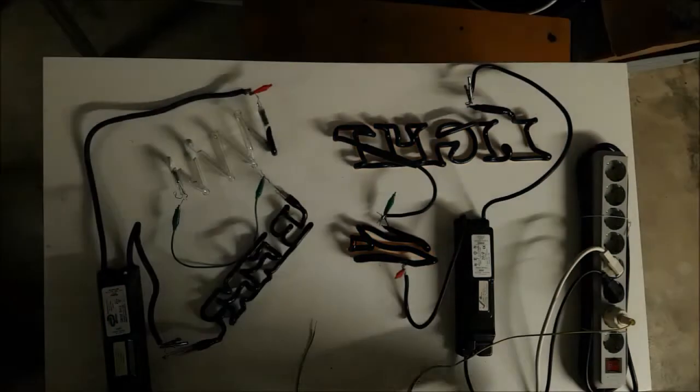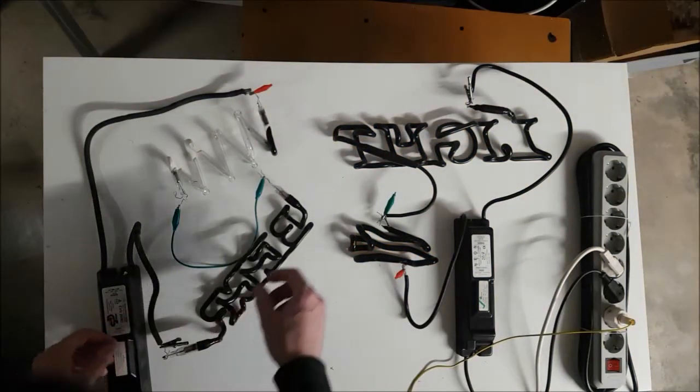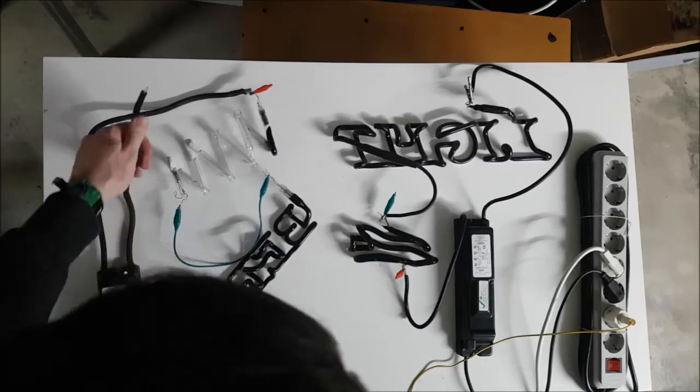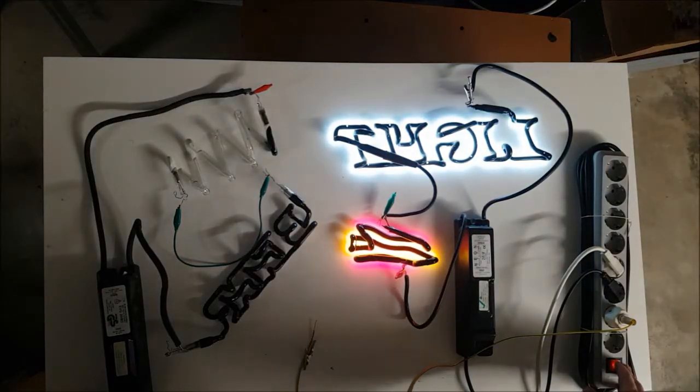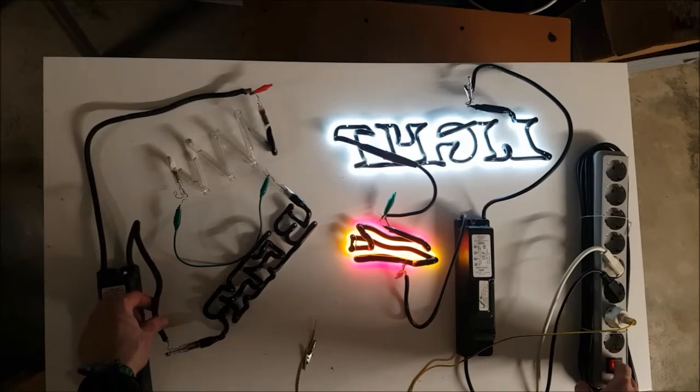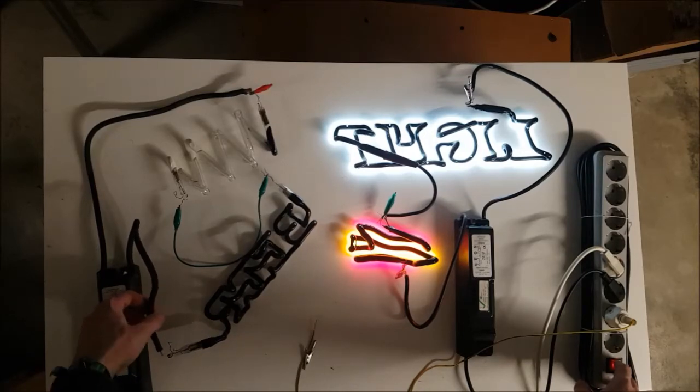So I'm turning off the power and I'm loosening this connection here. Just bending this up a bit. Turn it on. That was the correct behavior. You see that it flashed, detected the open circuit and shut off. So even when I connect the wires now, there is no light.